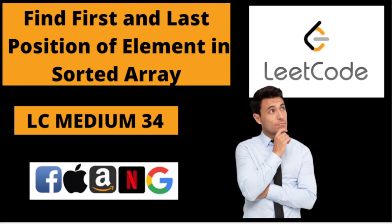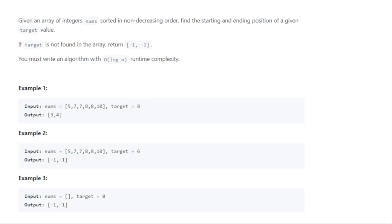Now let's begin with the solution. The question says we have been given an array of integers 'nums' in non-decreasing order — that means ascending order. We need to find the starting and ending position of a given target value in the array.